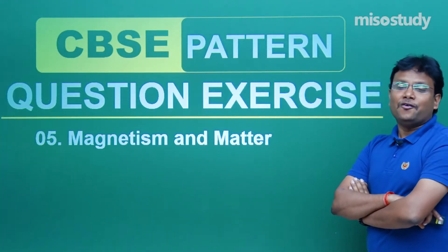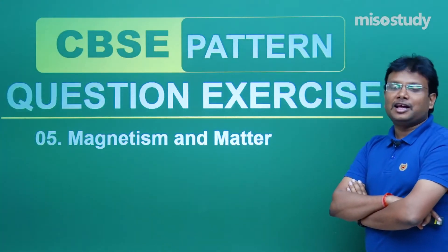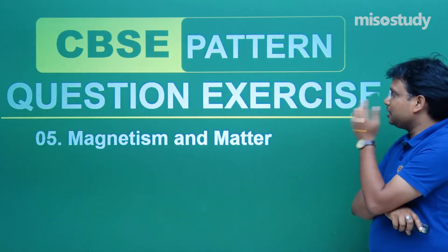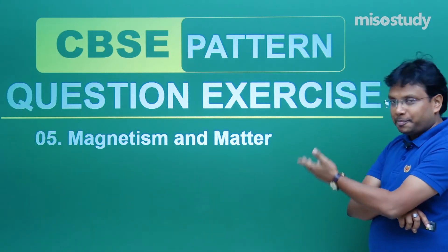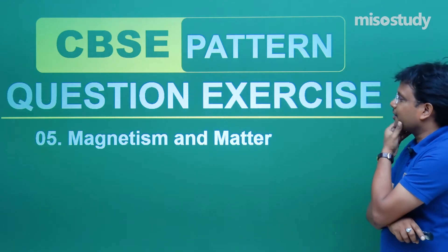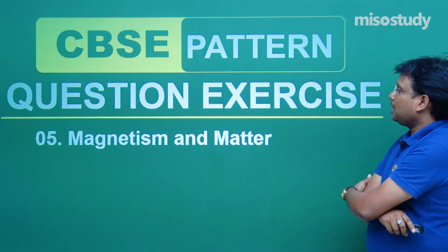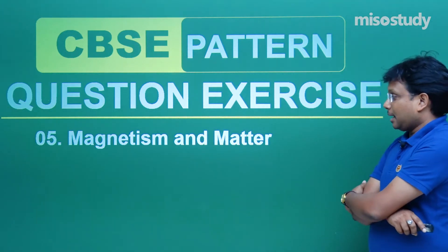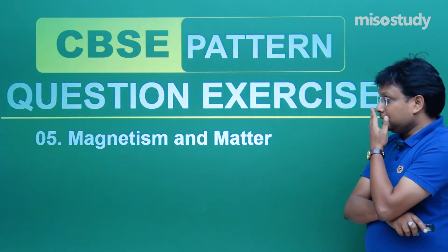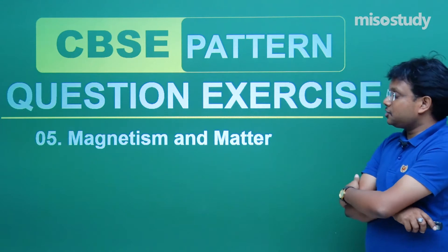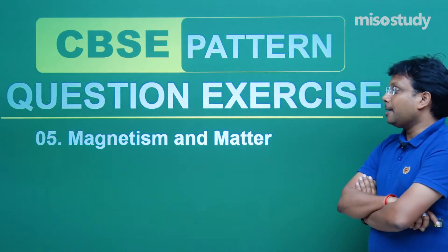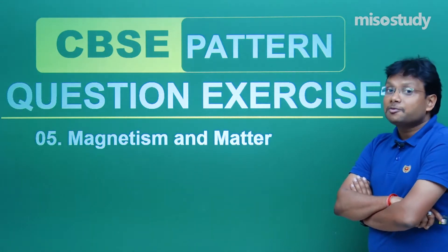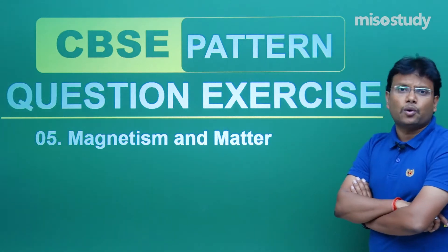Hello students, once again welcome back to Misostudy video classes. In this particular video we are going to discuss CBSE pattern question exercise for the chapter Magnetism and Matter. In this chapter we emphasized a lot on various magnetic materials, earth's magnetic aspects and causes and consequences.